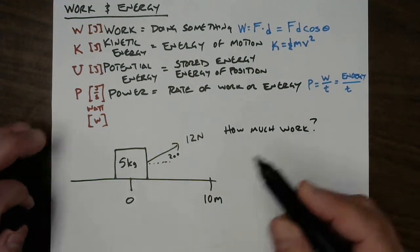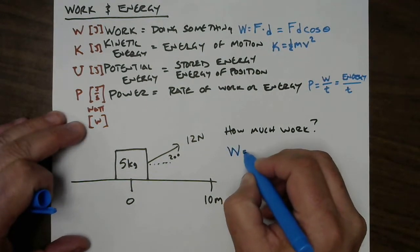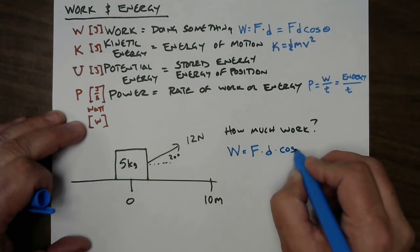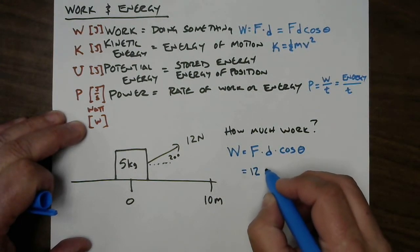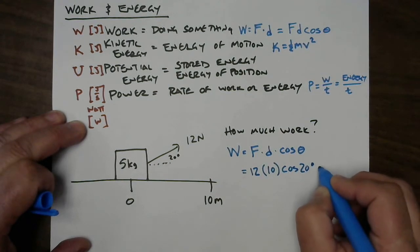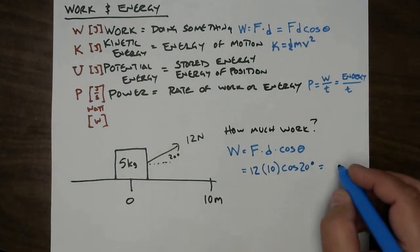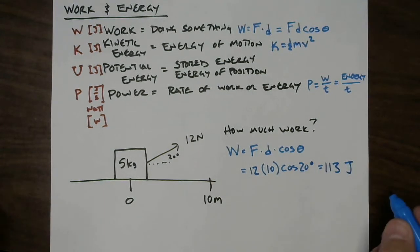The very simple calculation is that the work being done is the force you're exerting times the distance it's going to move times the cosine of the angle between them. The force being used is 12 newtons. The distance being moved is 10 meters. And we need the cosine of the 20 degree angle between them. So, 12 times 10 times cosine of 20 equals 113. When you round up, 113 joules of work have been done.